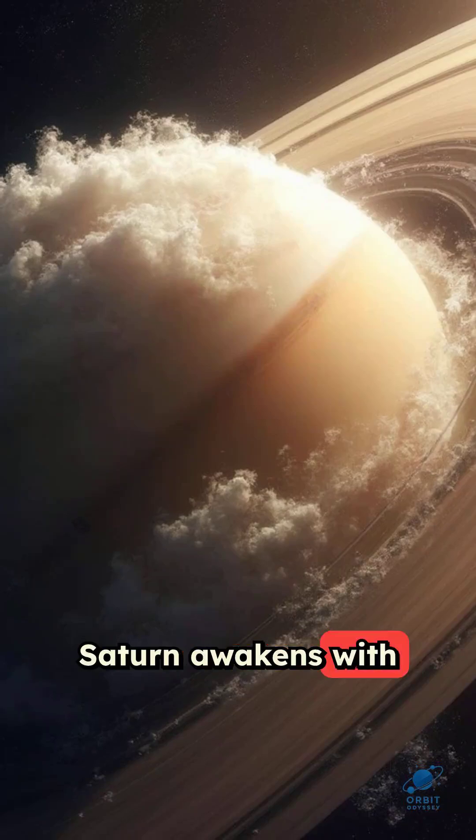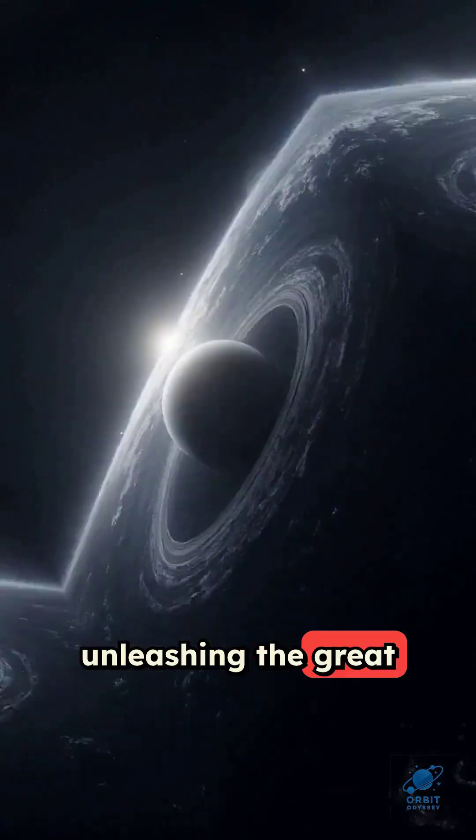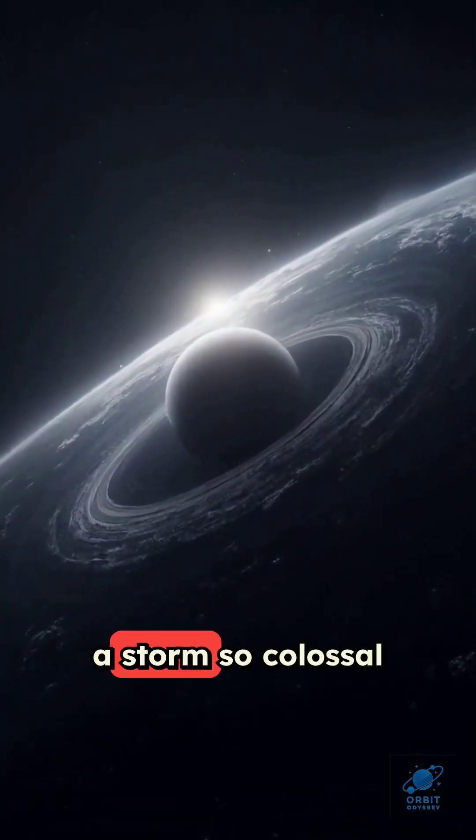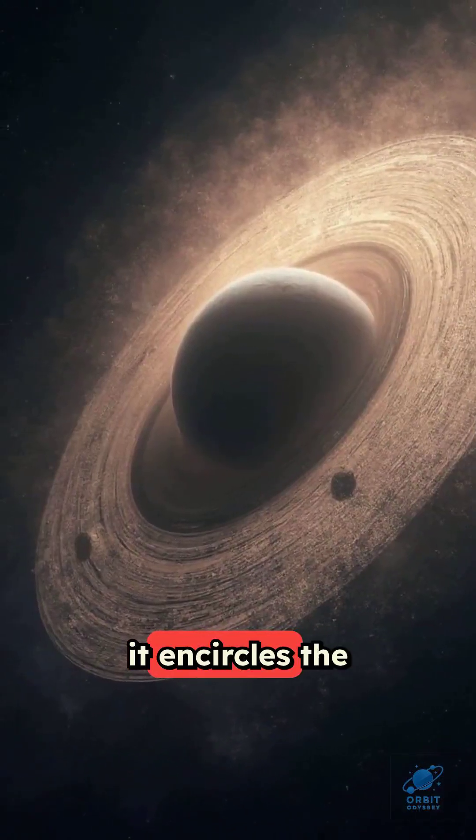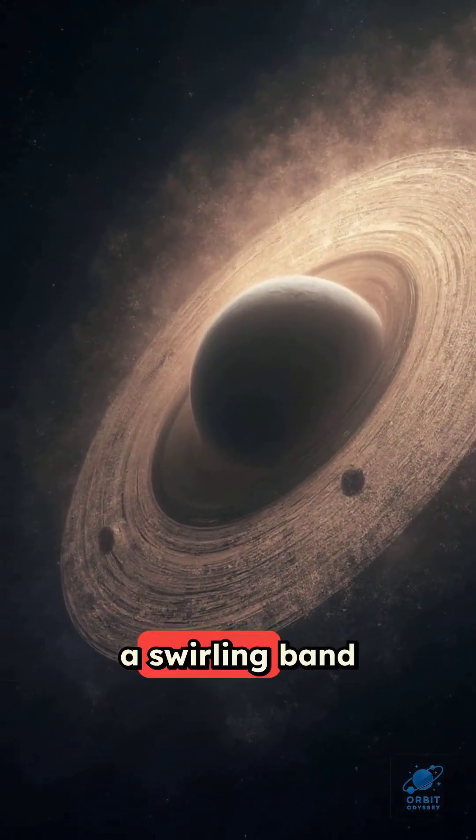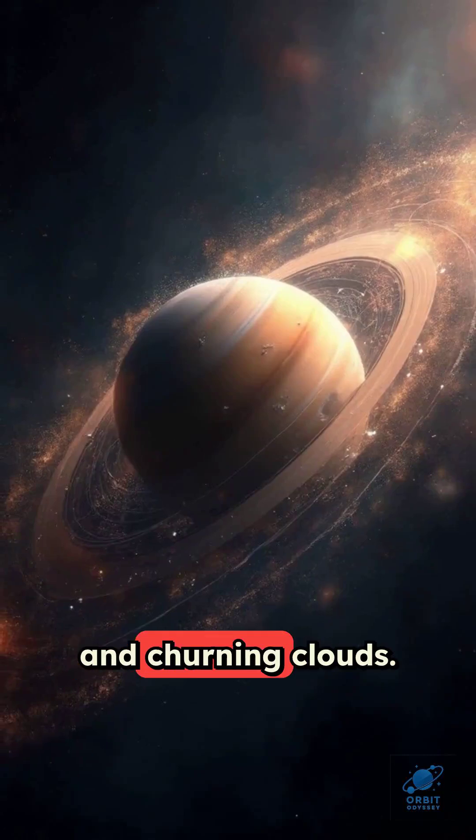Saturn awakens with a fury unlike any other, unleashing the Great White Spot, a storm so colossal it encircles the entire planet in a swirling band of roaring winds and churning clouds.